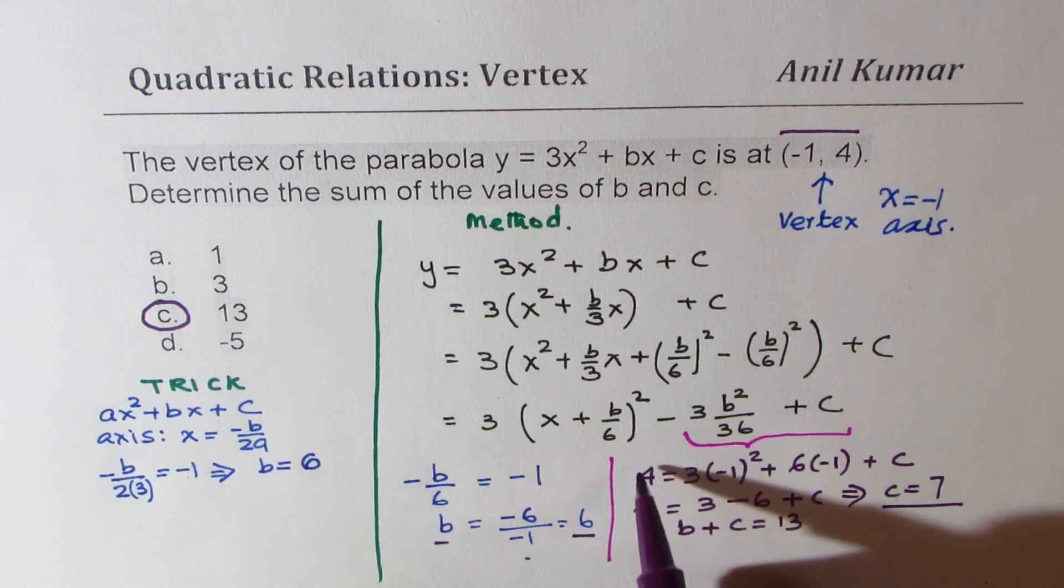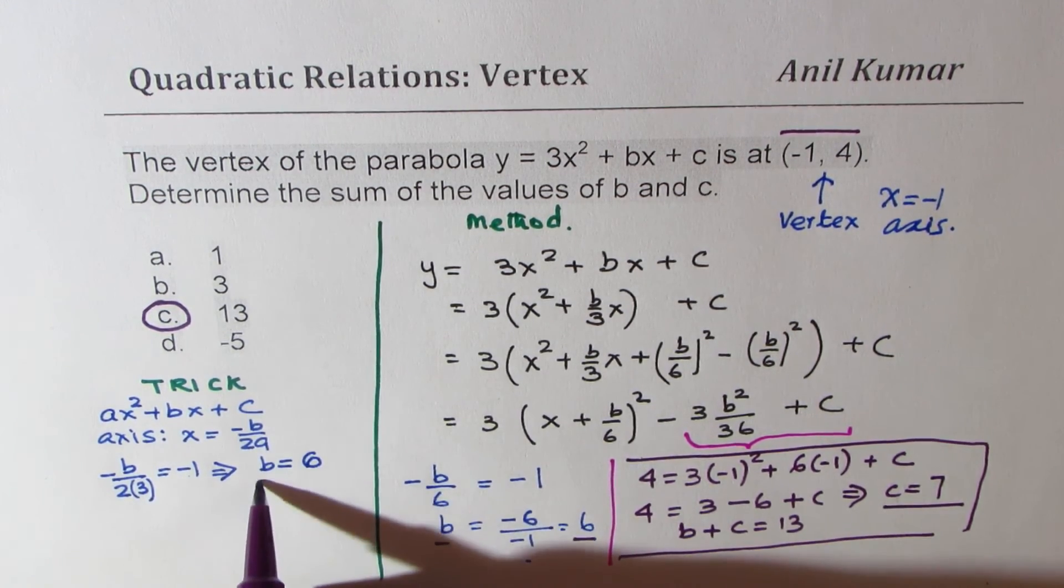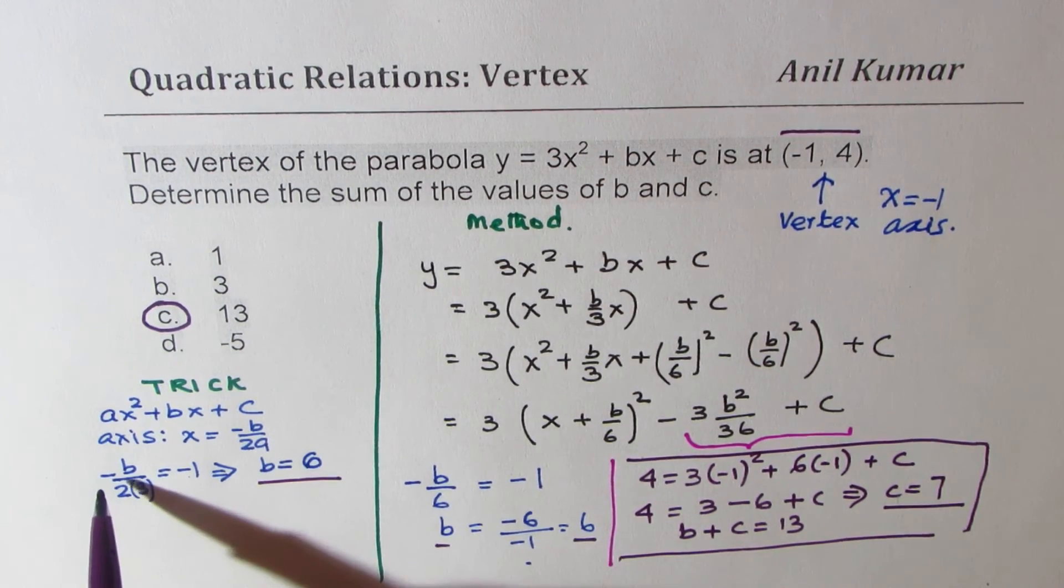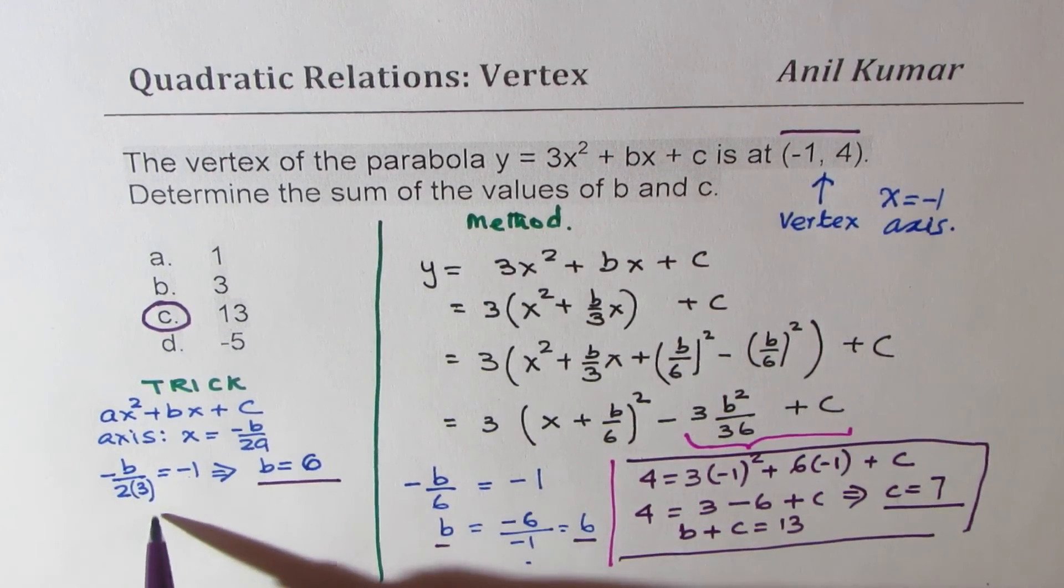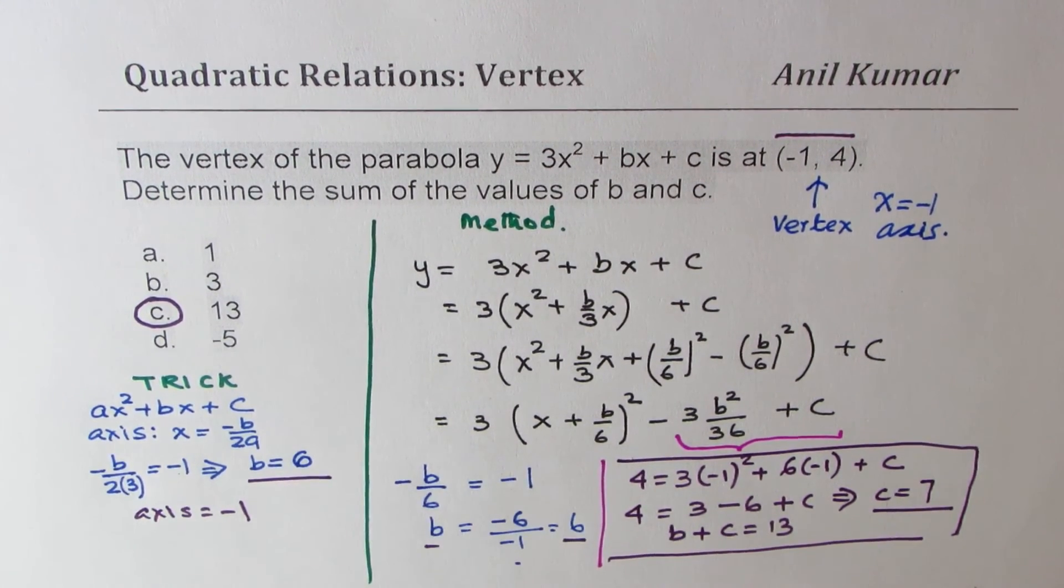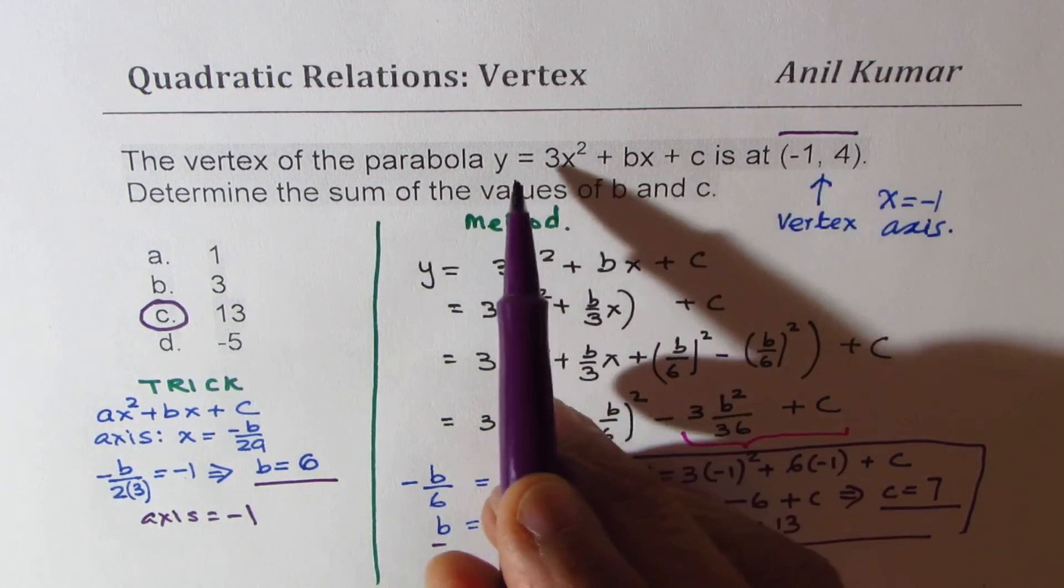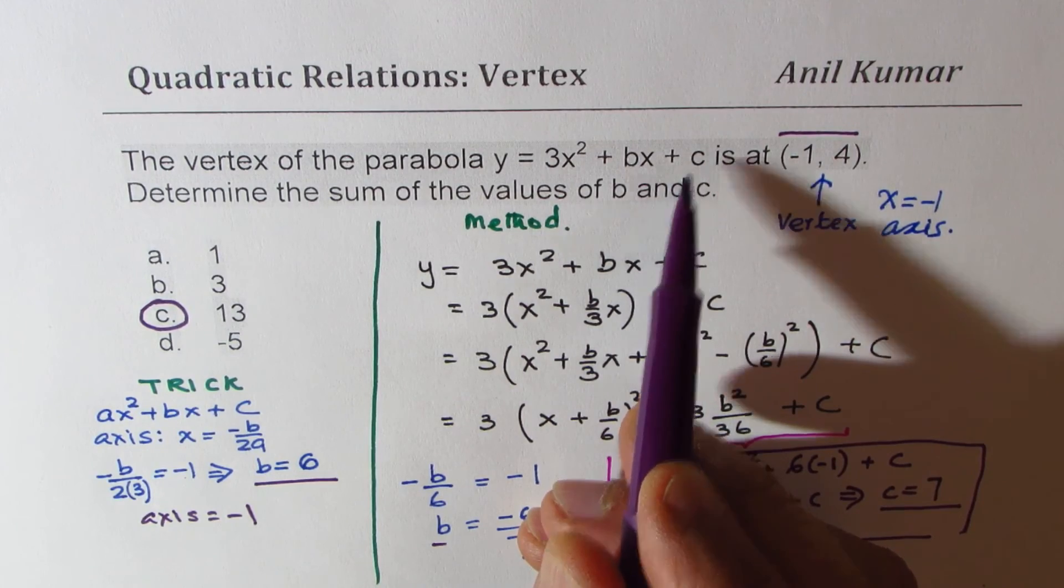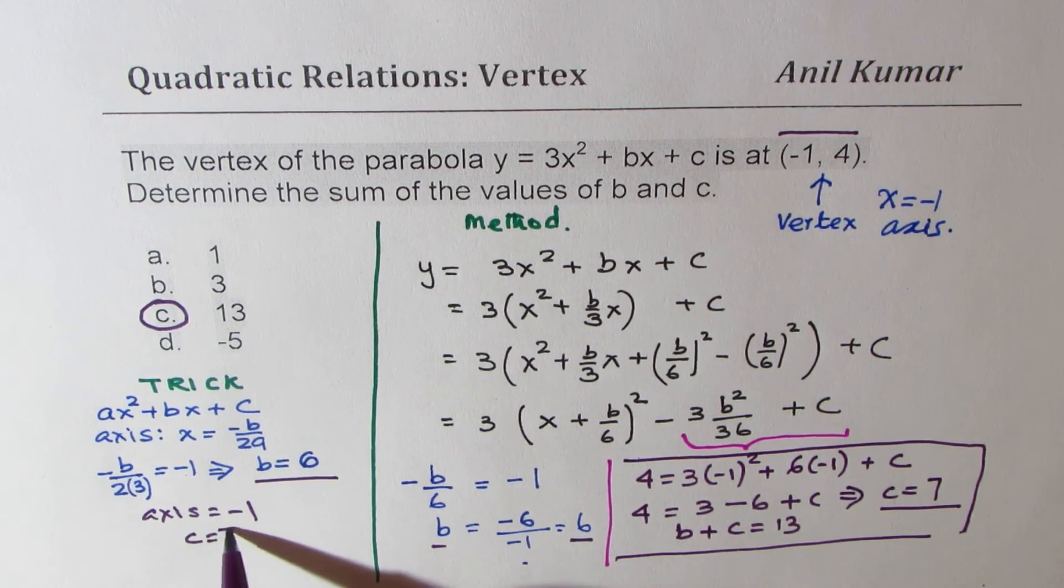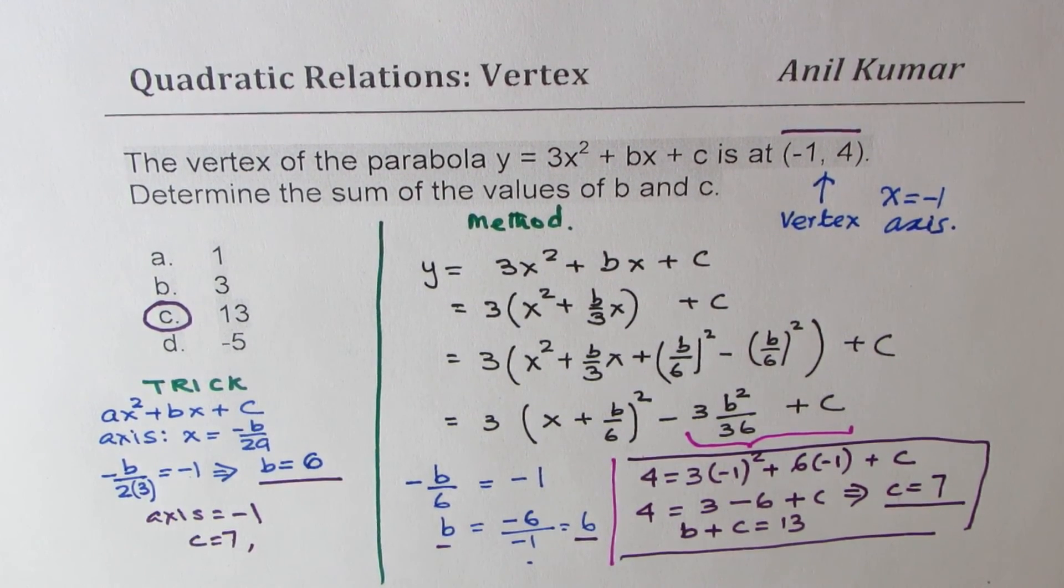Now, for finding c, this is a good method, what we did here. So first step, minus b by 2a gives you the axis. We know axis equals minus 1. So you get the value of b. Once you get the value of b, substitute minus 1 and 4 for y to find c. And once you know b and c, you know c is now 7, add them and get the result. So that helps you solve this question much faster. You can avoid completing the square.